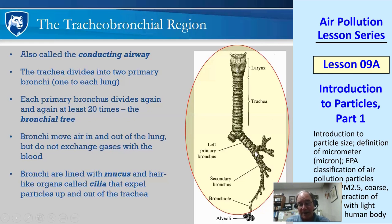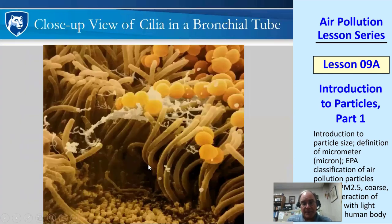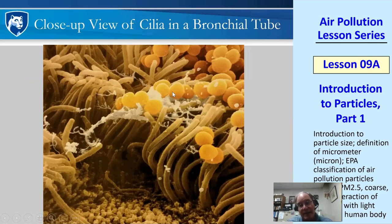This cilia mechanism is vital — without it, your bronchial tubes would keep filling with particles and you'd eventually suffocate. Here are electron microscope images of cilia — these little hairs look almost like fur, lining the inside of the bronchial tubes, moving and pushing particles upward.